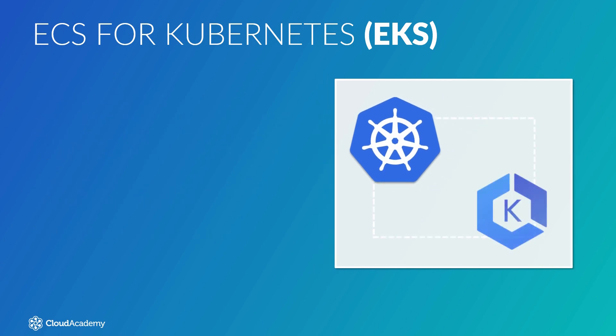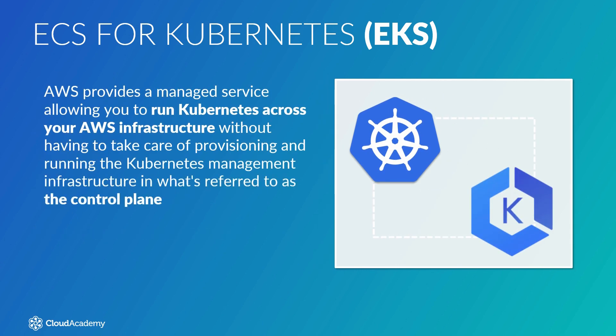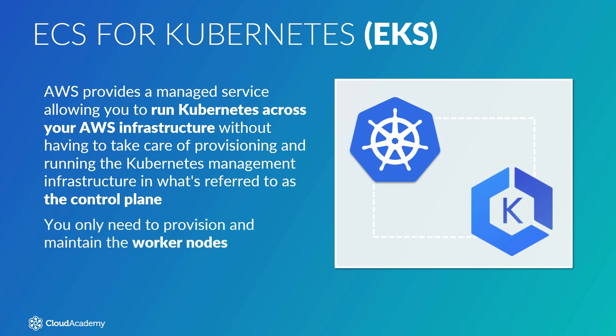So back to EKS. With EKS, AWS provides a managed service allowing you to run Kubernetes across your AWS infrastructure without having to take care of provisioning and running the Kubernetes management infrastructure in what's referred to as the control plane. You, the AWS account owner, only need to provision and maintain the worker nodes.